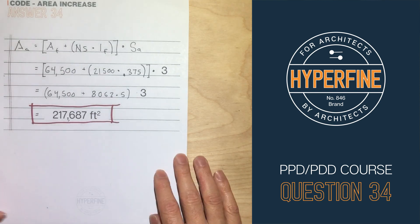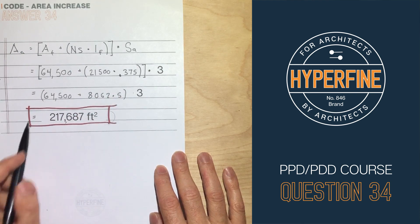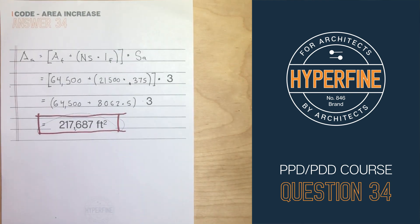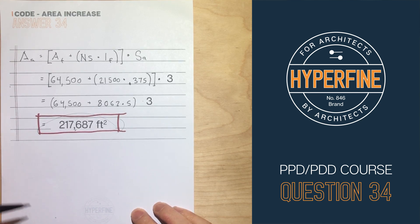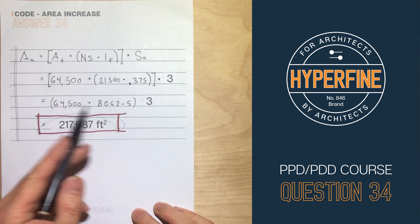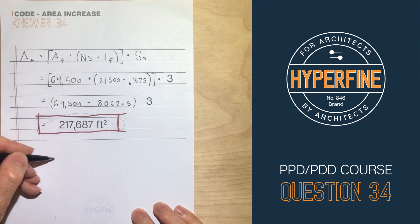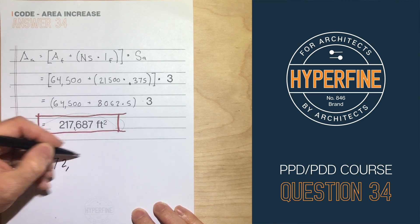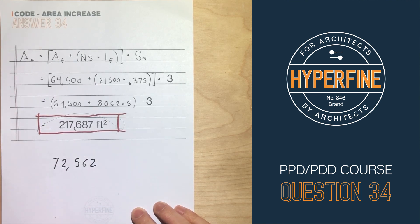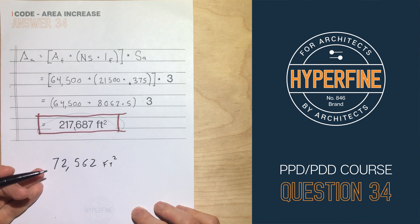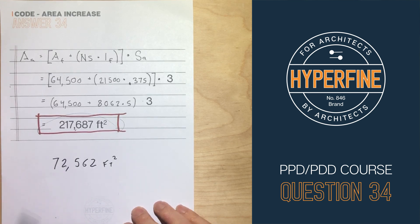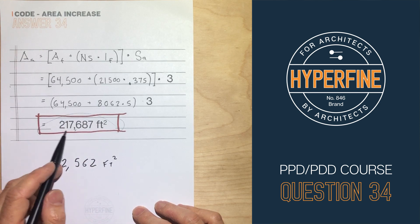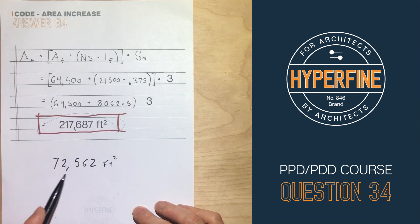We can now come back to our equation, plug in 0.375, and get our total allowable area of 217,687 square feet for the entire building. If you want the allowable area per story, use this equation with SA equals 1, which is the same as dividing 217,687 by 3. That gives 72,562 square feet maximum allowable per story. In that case you'd only build three stories, but you're allowed to build up to five — so you can distribute this 217,000 square feet however you want, as long as no single story exceeds 72,562.